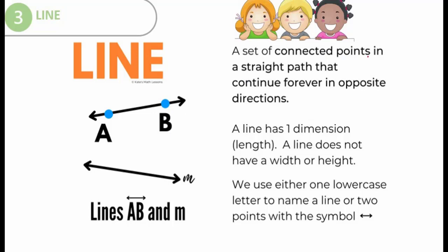If we join point after point infinitely, what do we get? A line. Now tell me, what is a line? A set of connected points in a straight path that continues forever in opposite directions. That is called a line.